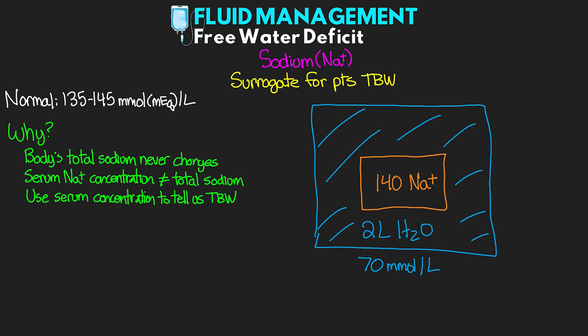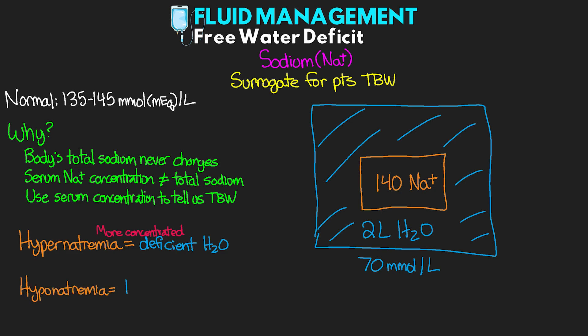To loop this all back in: if our patient is hypernatremic, then this means that they're going to be deficient in water because it's more concentrated, meaning there's less water there. And if they're hyponatremic, they have too much free water — it's too dilute a concentration. It really helps to understand that the amount of sodium is not actually changing; the only thing that's changing is how much water is either diluting or not present in order to concentrate that sodium in whatever volume is left.